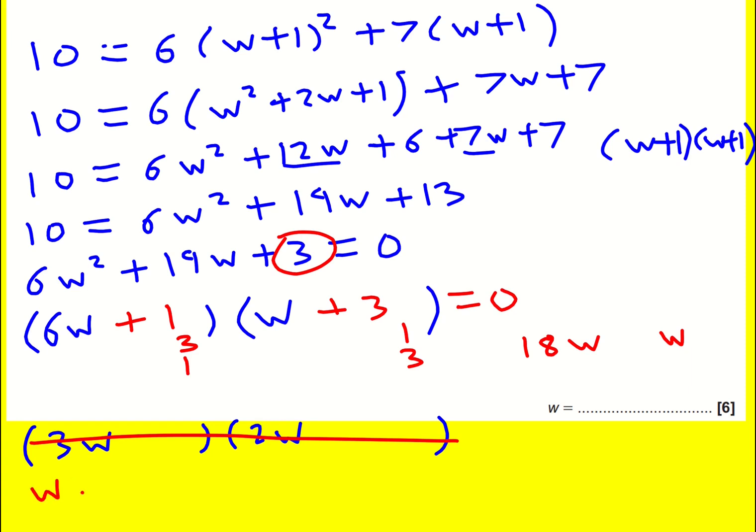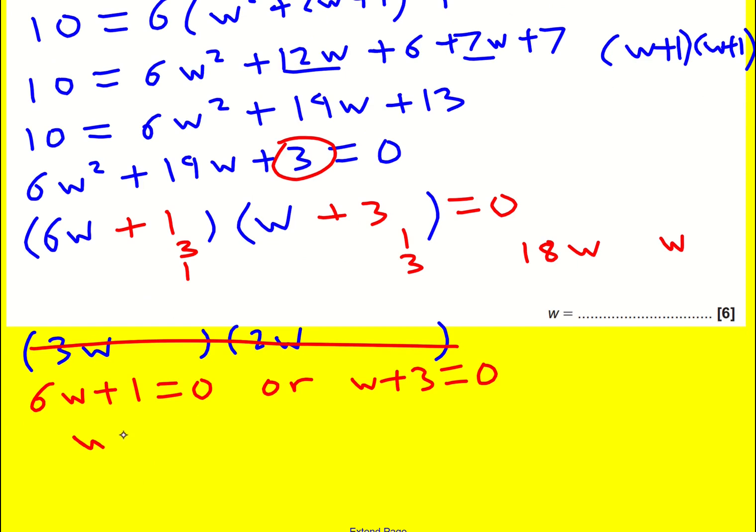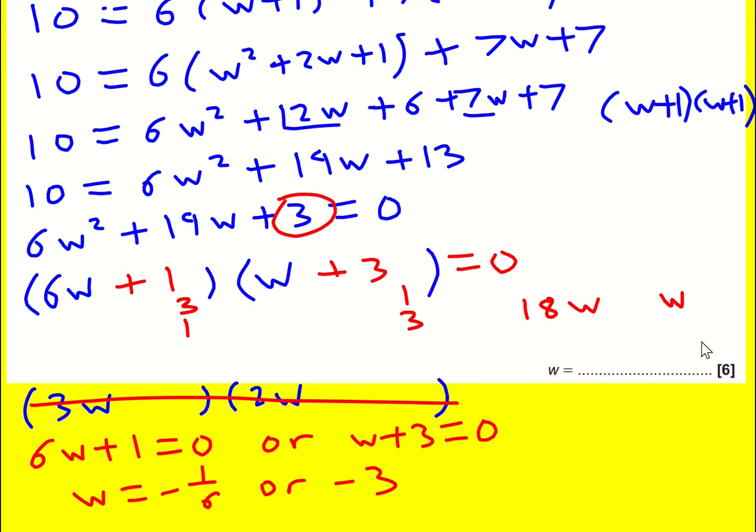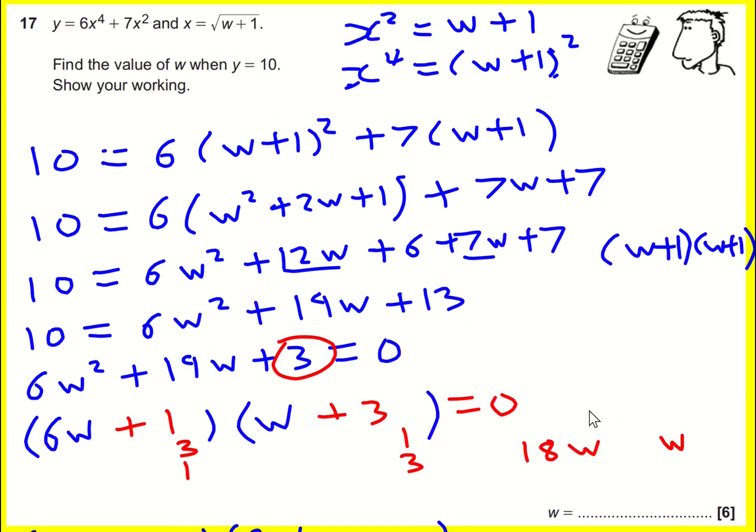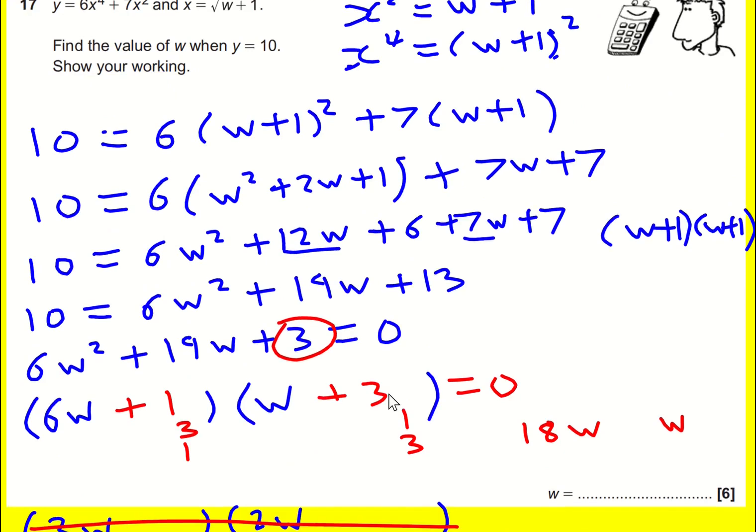I hope my method of working makes sense there. And I'm nearly done. If that's equal to 0, then, actually sorry, I'm rushing this. If that's equal to 0, then either 6w plus 1 equals 0 or w plus 3 equals 0. I can solve this, w is equal to minus 1 sixth or minus 3. Okay, there's only a little 1 space answer there, but normally you get 2 answers. But I just need to say something right now.